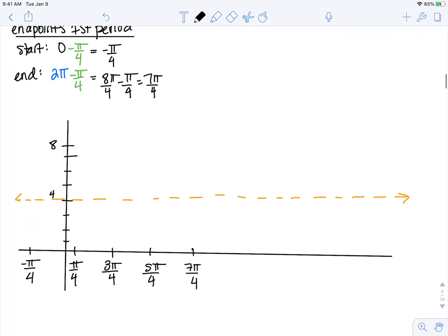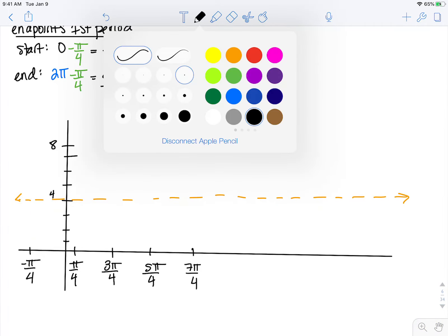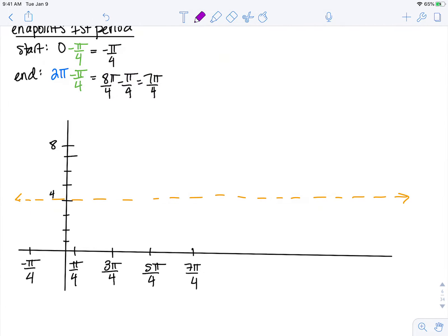So now I'm going to sketch my first period. So cosine at 0 is going to be stretched up an amplitude of 4 from this new 0 axis. So that's going to be here at this point, negative pi over 4, 8.